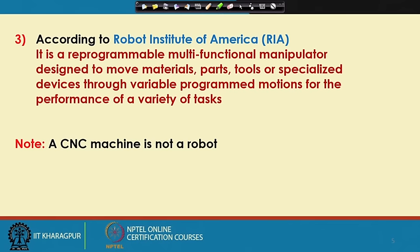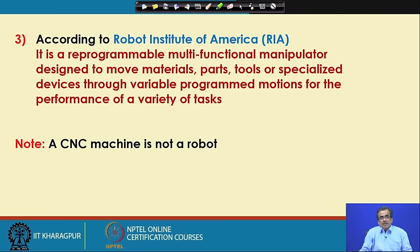Here we are using the term manipulator. By manipulator, we mean a robot with a fixed base. This manipulator could be either a serial manipulator or a parallel manipulator — those things I will be discussing in detail after some time. Another very popular definition is given by RIA, that is, the Robot Institute of America.